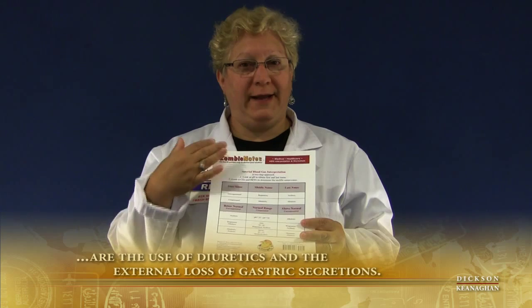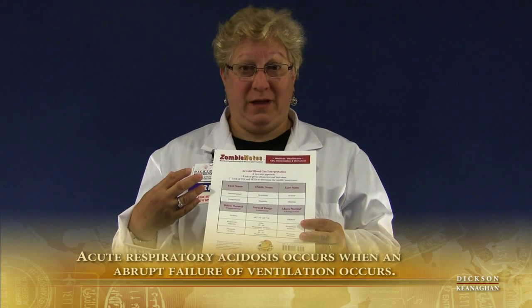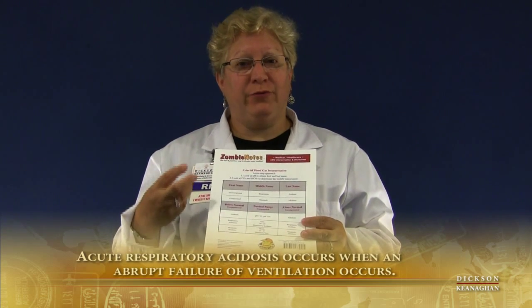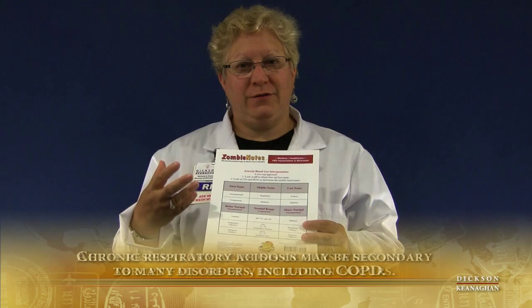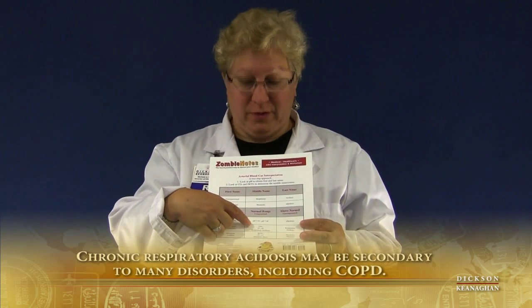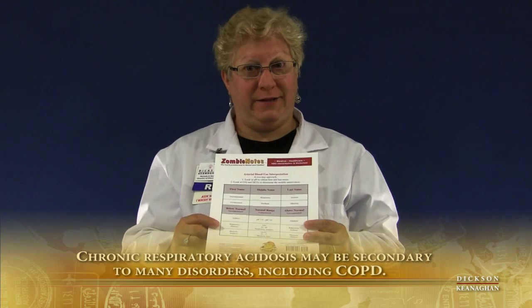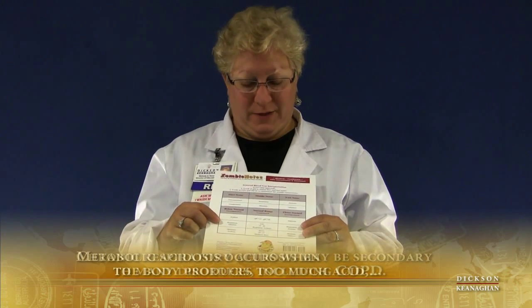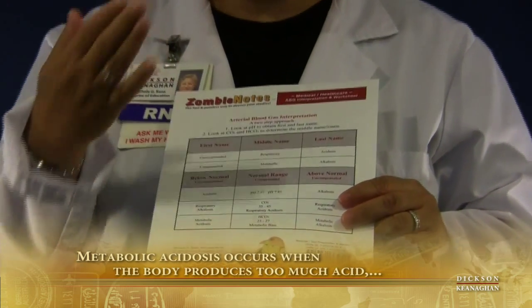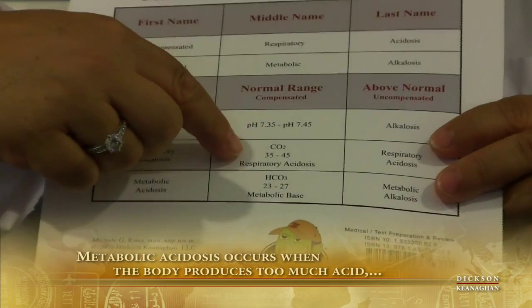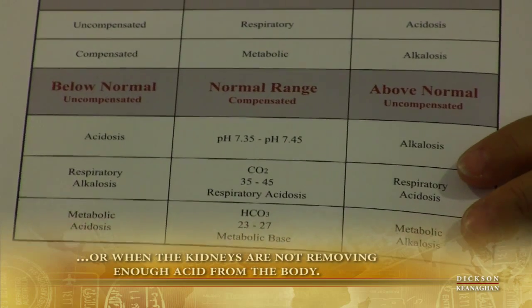If your lungs are not excreting enough CO2, like in patients with emphysema where air gets trapped, the CO2 gets trapped too. When we're not breathing adequately, like in respiratory arrest, you retain CO2. The respiratory acid builds up and your CO2 number will be increased. That's how respiratory acidosis works. If we're breathing too rapidly — hyperventilation — we blow off too much CO2, and our CO2 number will be below 35, which makes us more alkaline than acidemic.